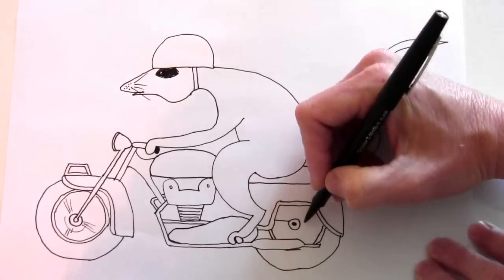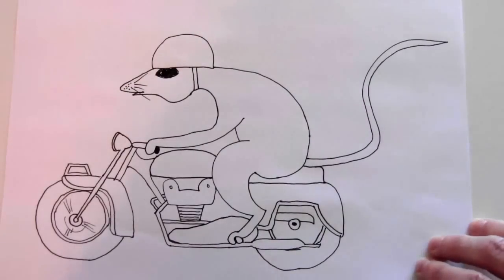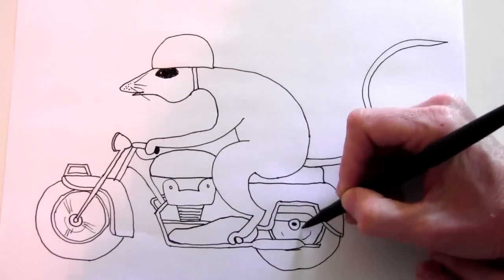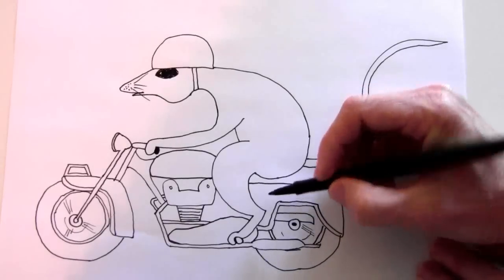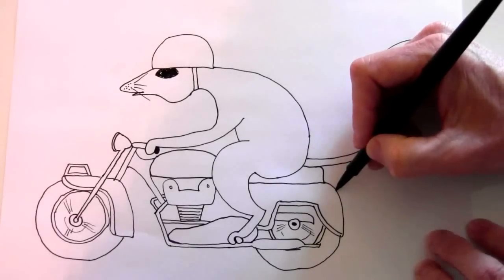A line that comes out and behind that, down and over. And then this just has a partial circle and some lines.